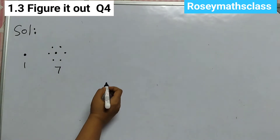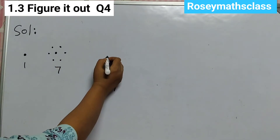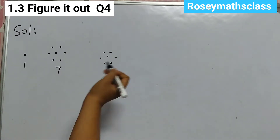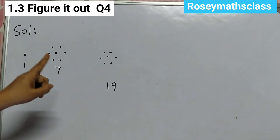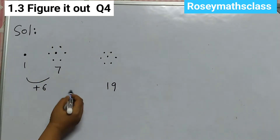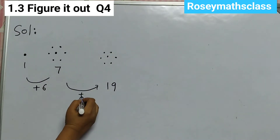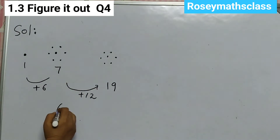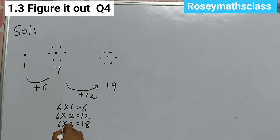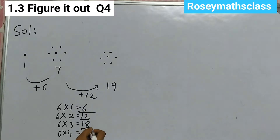Next we have 19. So again we will draw this. The rule is: here we are adding plus 6, next we are adding 12. The table of 6's — 6 ones are 6, 6 twos are 12, 6 threes are 18, 6 fours are 24. So we are going on adding first 6, then 12, then 18, then 24. That's the pattern here.